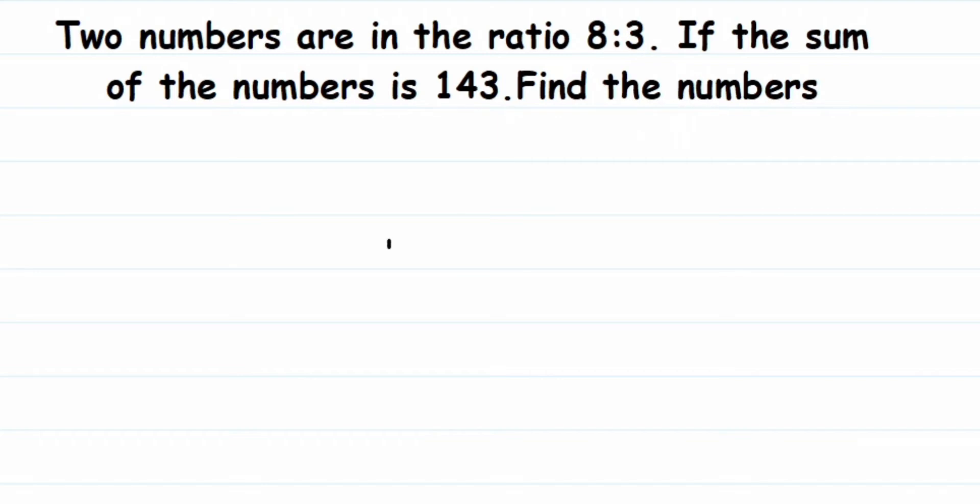convert this into a ratio, what you're going to do is cancel them to bring to the lowest form. If I cancel them in the four table, I'll get 3 and then here 4. So 3/4 we cannot cancel further, so the ratio will be 3:4. If you remember, I have cancelled the number.